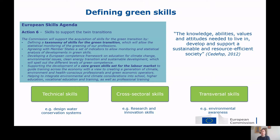In concrete terms, we can distinguish three broad categories of green skills. There are skills that are technical by nature, meaning that they address the use of green technologies — for example, the skill 'design water conservation system', which refers to the use of specific technology for water conservation. We then have skills that are more cross-sectoral, addressing the transversal topic of sustainability across sectors — for example, research and innovation skills using innovative methods to reduce the use of resources. Finally, we have transversal skills, meaning competences that relate to environmental awareness of the citizen, which are also a very important part of the taxonomy for green skills.